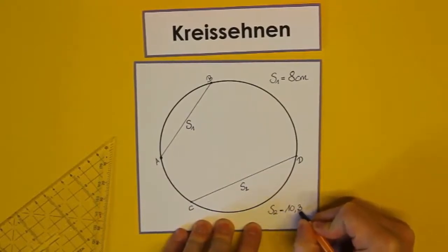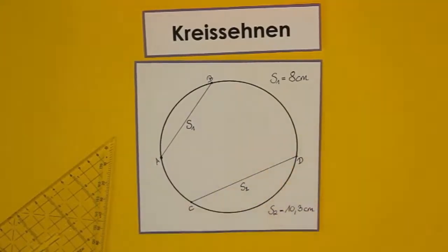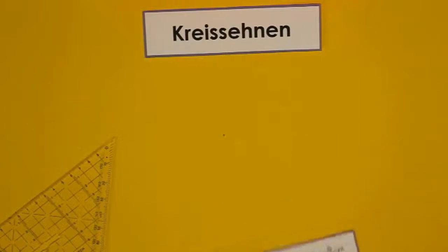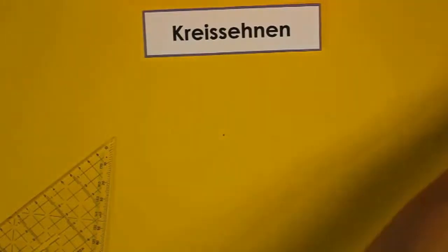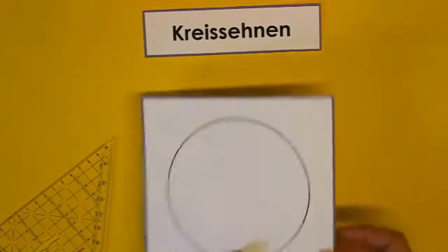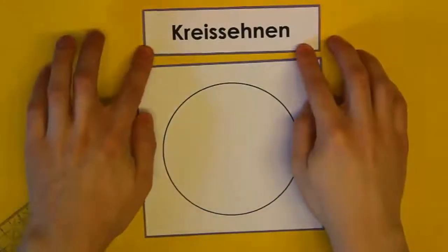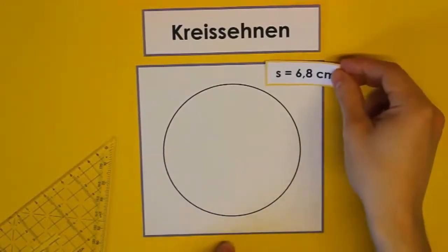Und zum Abschluss, das ist jetzt ganz wichtig, machen wir das Ganze umgekehrt. Wir haben einen Kreis und wir möchten eine Szene mit einer vorgegebenen Länge konstruieren. Ich nehme jetzt einfach mal einen neuen Kreis her und sagen wir, wir wollen darin eine Szene zeichnen, die die Länge 6,8 cm hat.